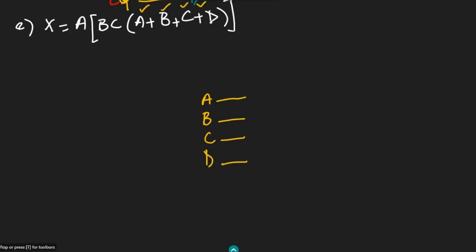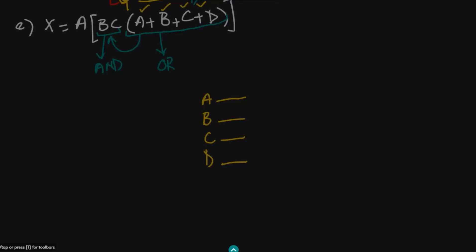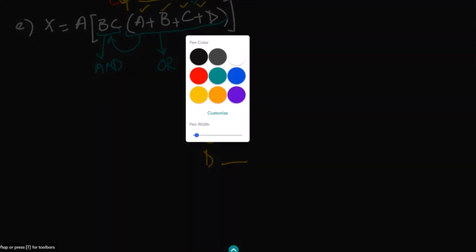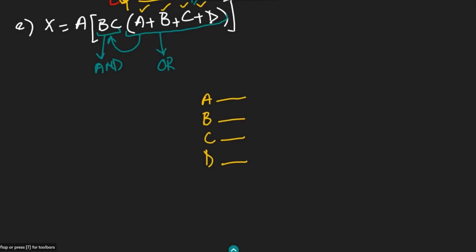I can very easily see that inside this bracket, these four are added together, then the result is multiplied with b·c. Here a, b, c, and d are added together, so I am going to use a 4-input OR gate. This OR gate has 4 inputs: 1, 2, 3, 4 — to it I apply a, b, c, and d — and the output of it will be a plus b plus c plus d. With it I will also have b·c.